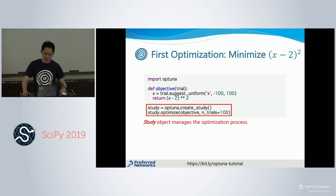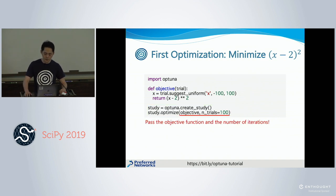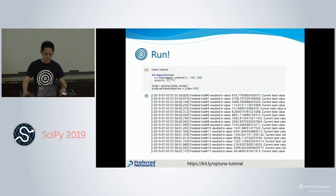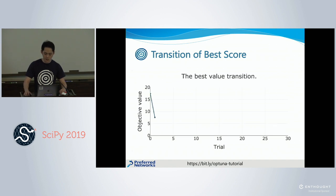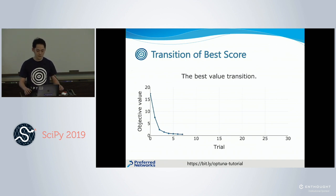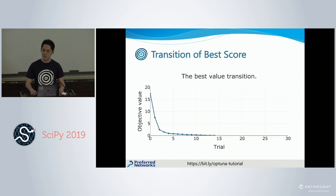To optimize the task, you need to instantiate the study object, which manages the optimization process, and invoke study.optimize to start the optimization, passing the objective function and the number of iterations. Executing this script, you can see a log which includes the result of the objective value. This slide visualizes the optimization process, where the horizontal axis shows trial count and the vertical one shows objective value. At first, OpTune broadly explores the search space, and it gradually converges near the optimal point.